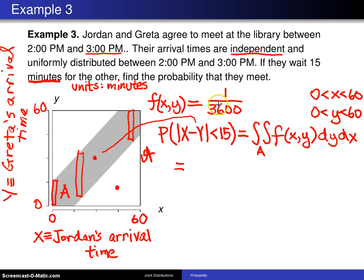Which is to say I'm going to take this 1/3600th and I'm going to pull it outside of the integral. And now what is left is I would like to figure out the area of this shaded region here. Well, an easier way of doing that is to take the area of the whole region, which we know is 60 times 60 or 3600, and subtract out the two white triangles.